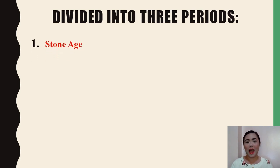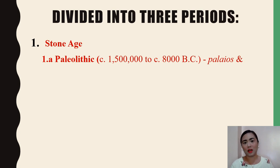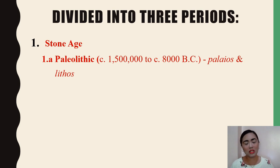The first division is the Stone Age, named for the use of stone tools and weapons during that time. The Stone Age can be further subdivided into three periods. The first is the Paleolithic — from the Greek words palaios meaning old, and lithos meaning stone — so it roughly translates as Old Stone Age. The major discovery during the Paleolithic period was fire and the usage of fire.